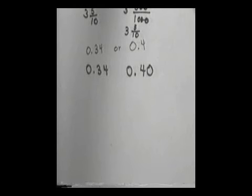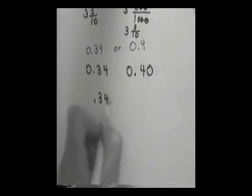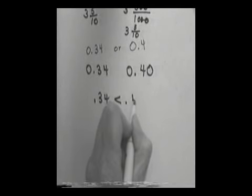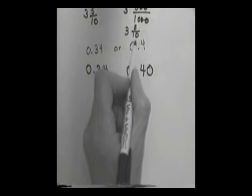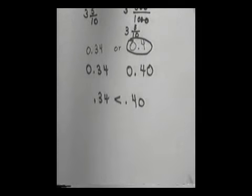It doesn't change anything. 4 tenths that I originally had means the very same thing as 40 hundredths. I can reduce 40 hundredths down to 4 tenths. So, I can always add extra zeros. Once I add the zero, then you can easily tell that .34 is smaller than .40. And so, adding zeros in there will help you compare your two numbers. So, the original question of which was larger, this was your larger number even though originally it only had one decimal place.